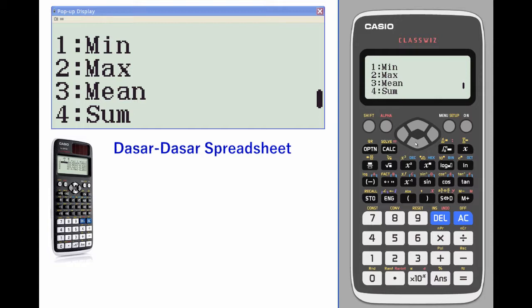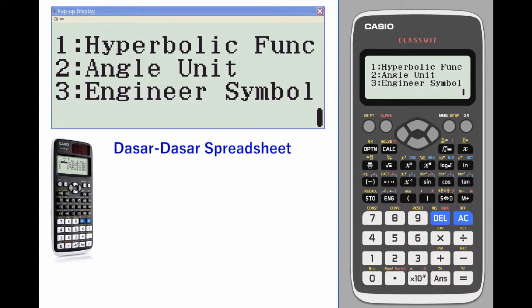Here are some calculations: minimum, maximum, mean, and sum, and then some of your universals.